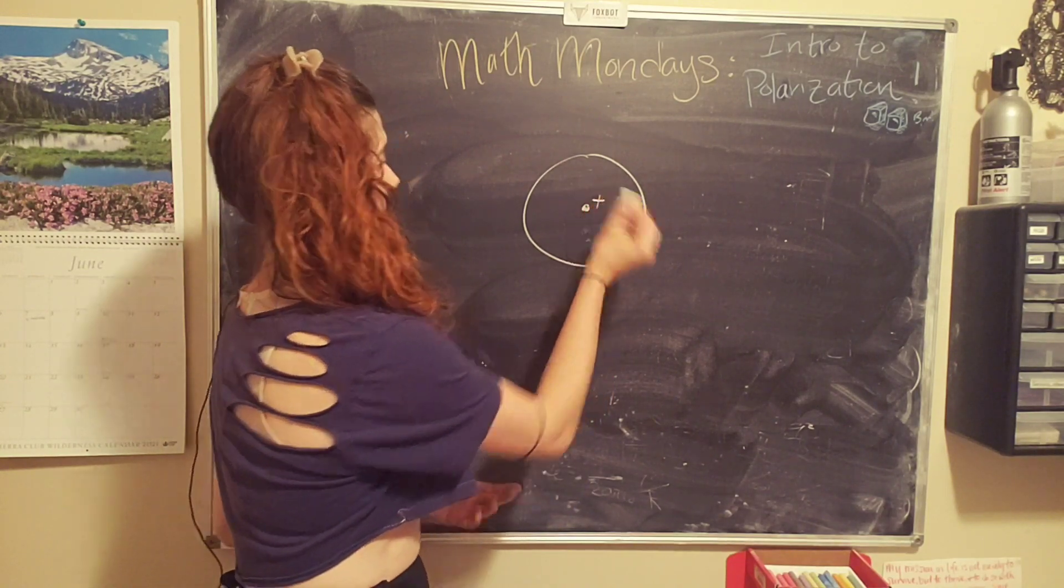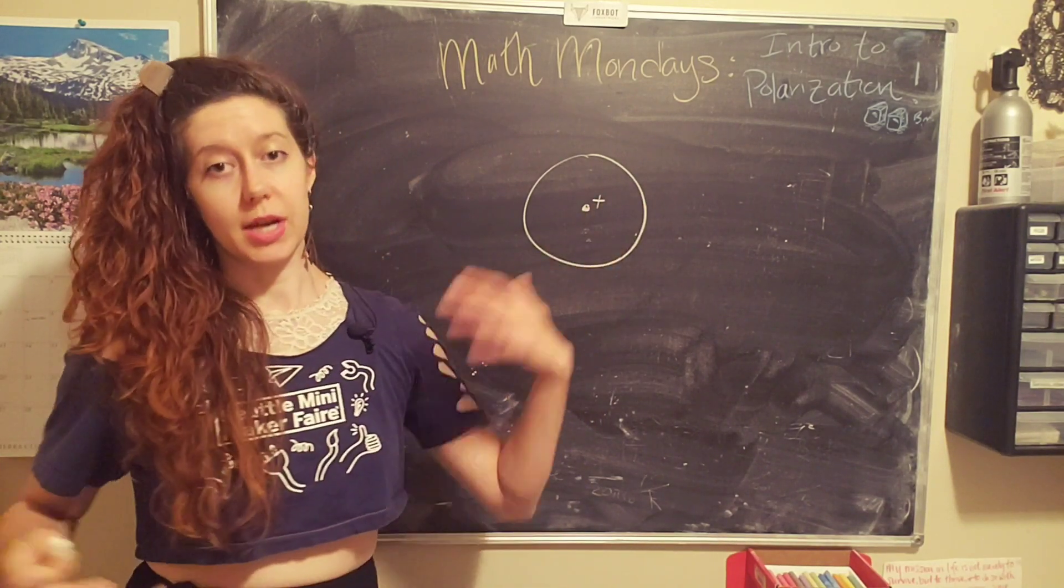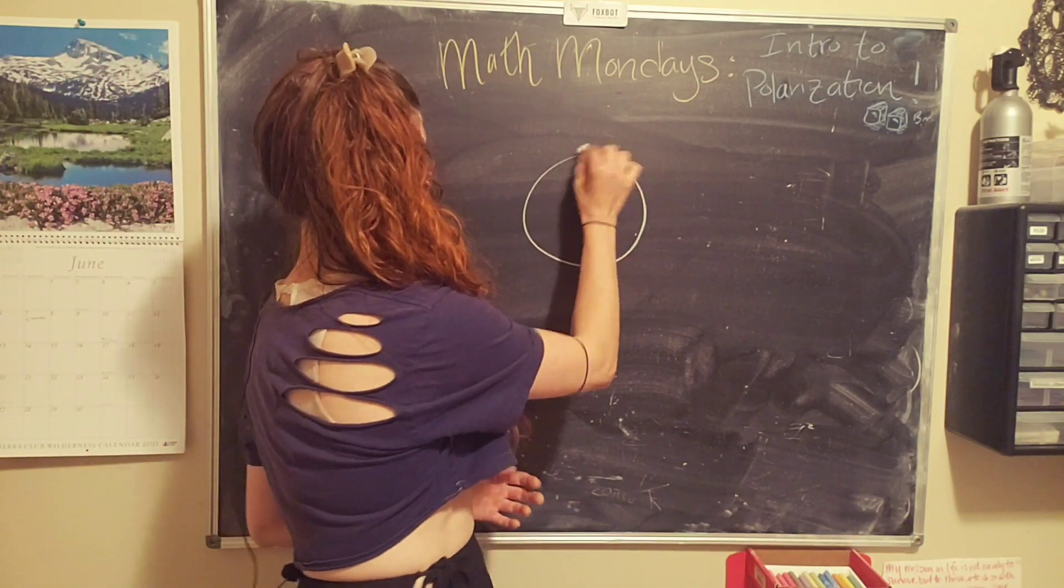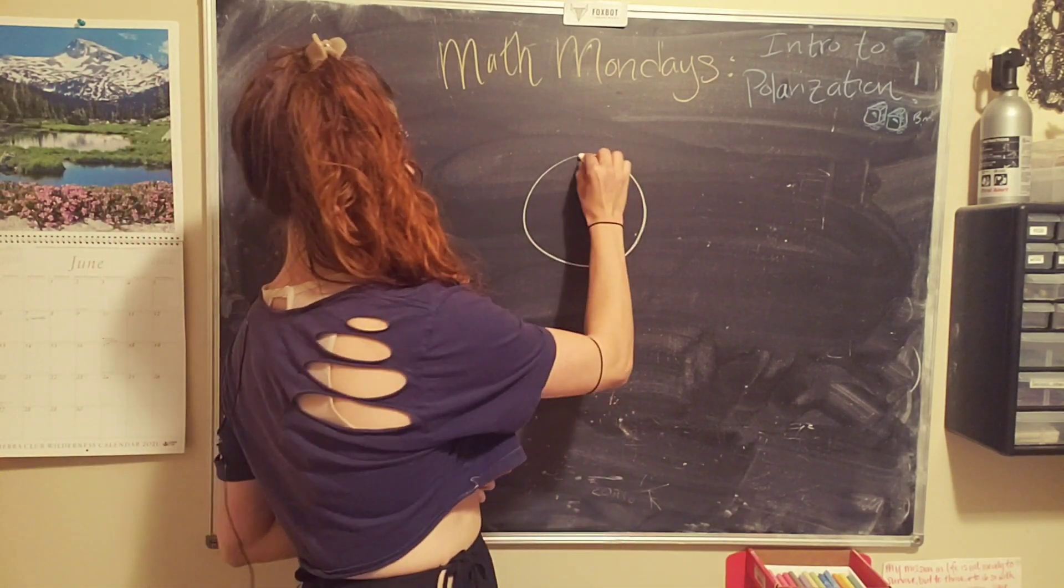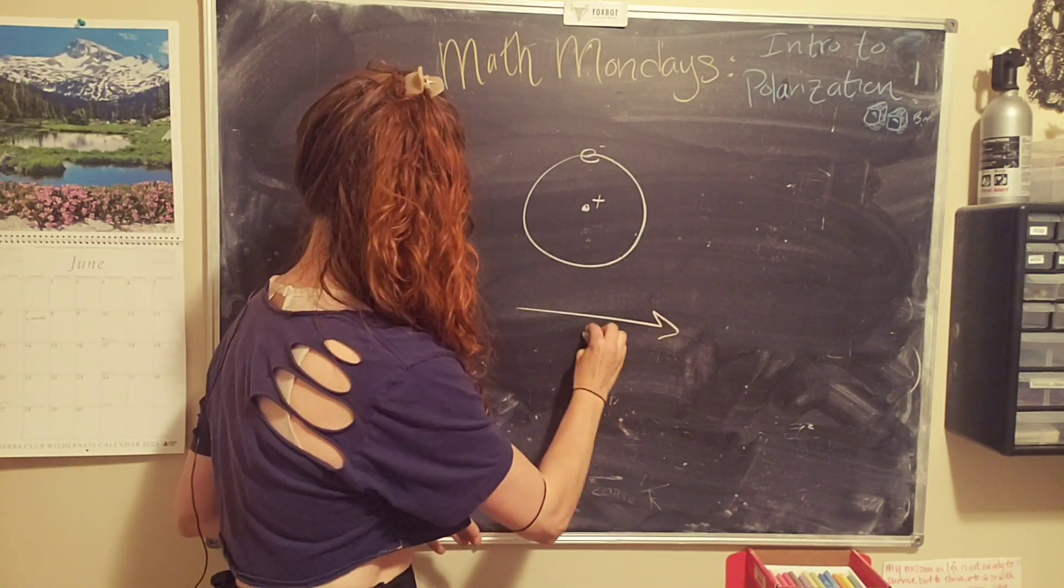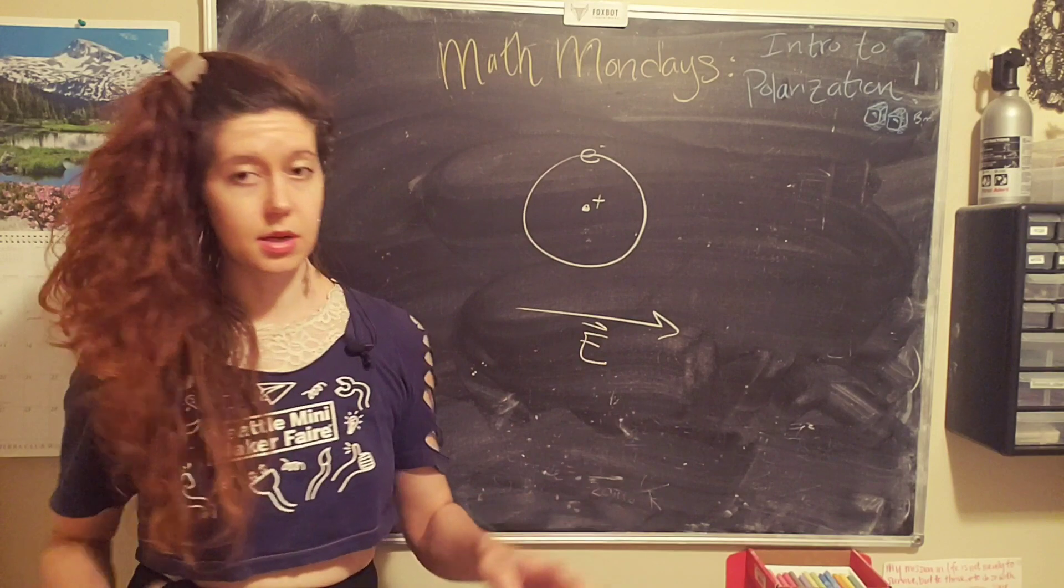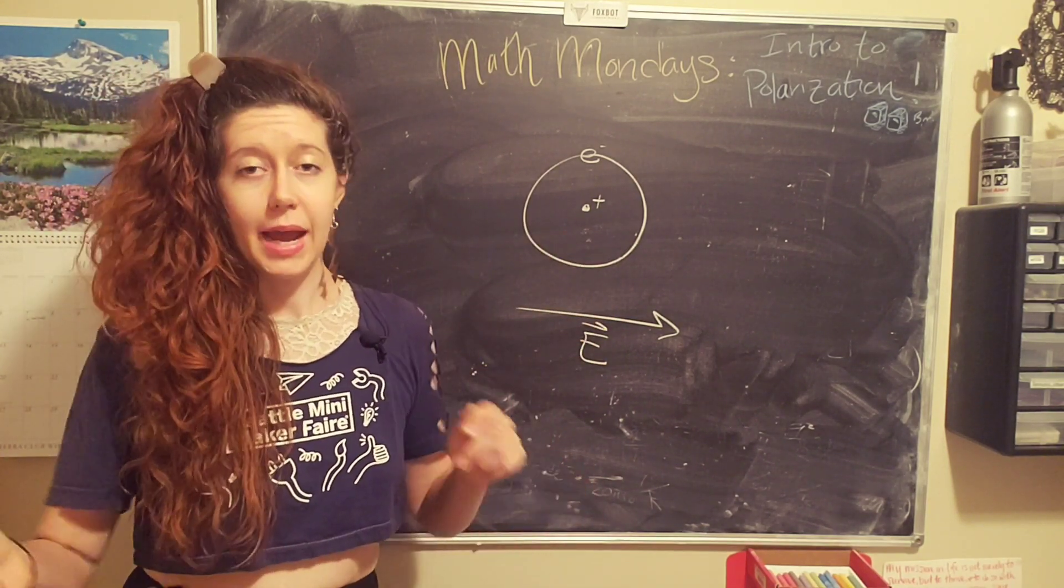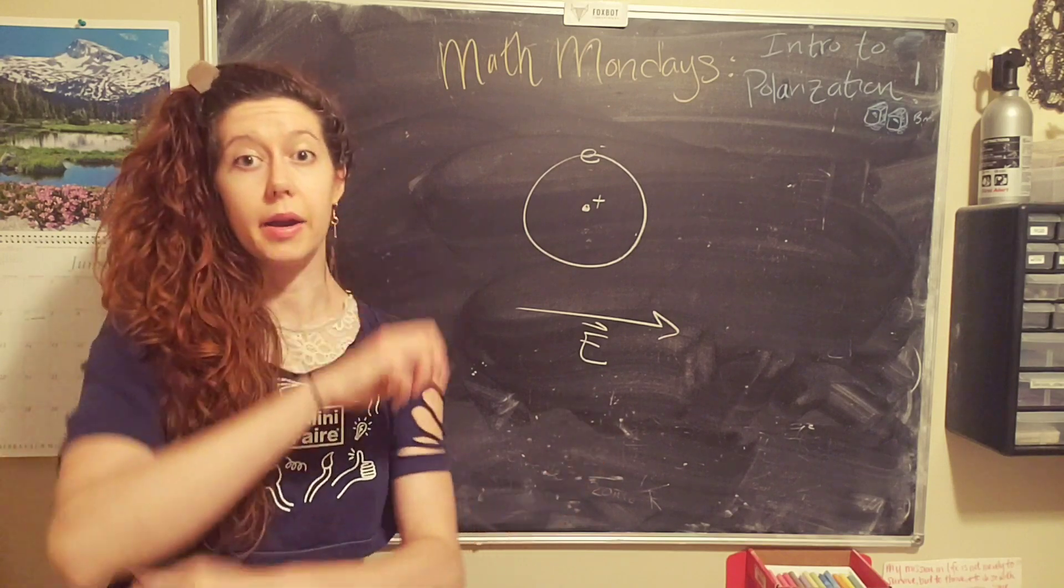So you have a neutral atom, which has a positively charged nucleus and a negatively charged electron cloud around it. If you apply an external electric field, it can do two things to distort the atom. It can stretch the atom, and it can cause the atom to rotate.